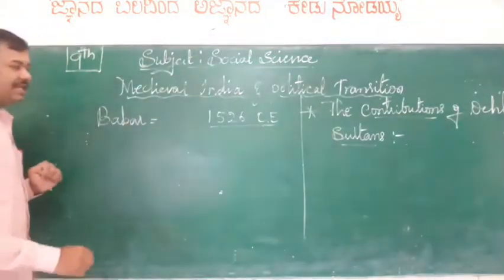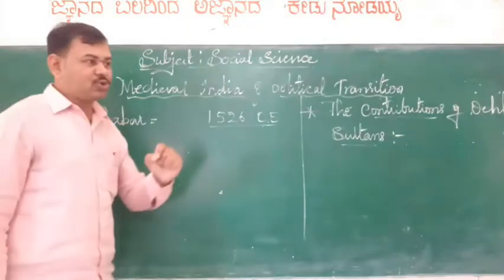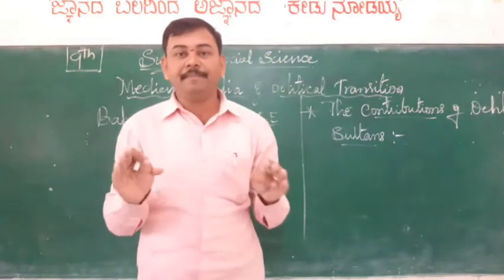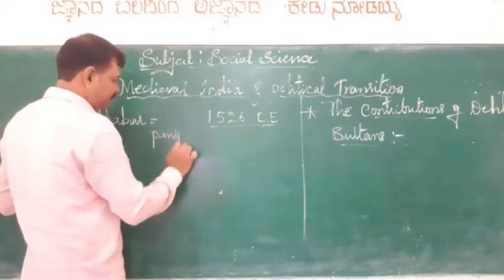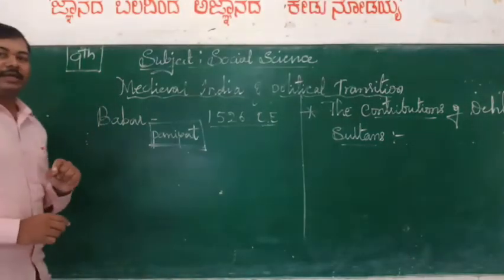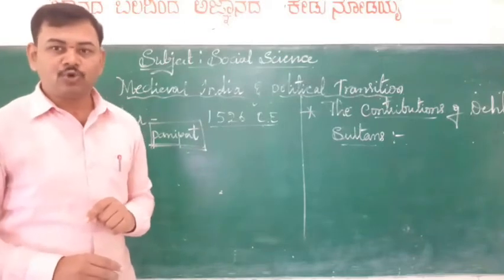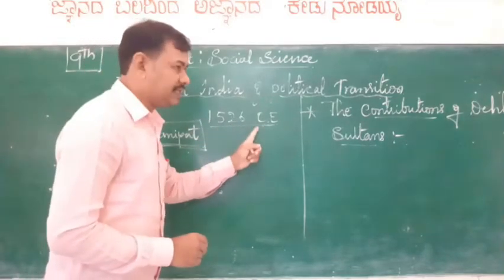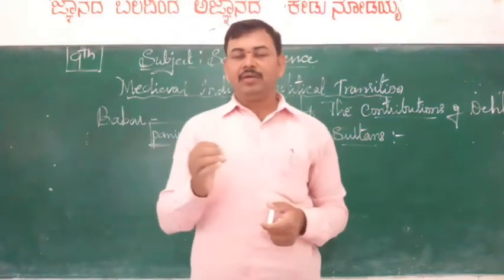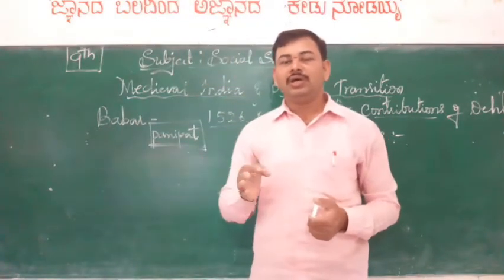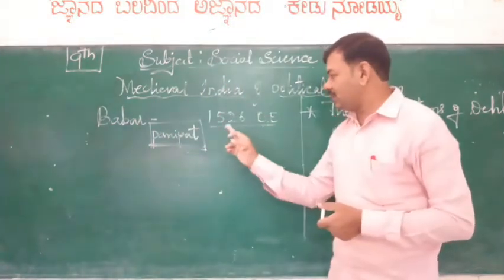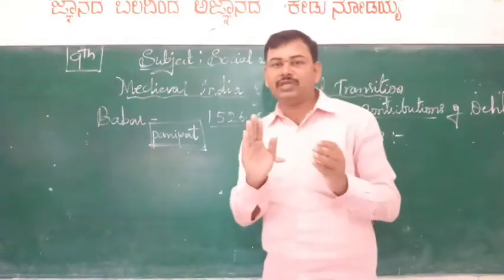Babur invaded India. At that time, Ibrahim Lodi tried to check the invasion of Babur. Then the First Battle of Panipat took place between Babur and Ibrahim Lodi. This battle took place in 1526 CE. In this battle, Ibrahim Lodi was defeated by Babur. Thus, the Mughal Empire was established in India in 1526 CE. This is what we discussed in the last class and I hope all of you understood it well.